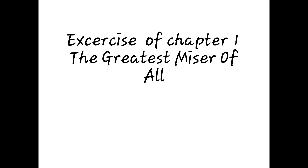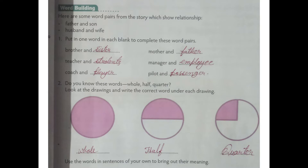Now we will go to Word Building. From Word Building, there is a section on pair of words. For example, as written here: father and son, husband and wife — these are pair of words. Similarly, in our local language we have pairs like chai and coffee, ana and jana, khana and pina. These are very common words that are commonly used together as pairs.